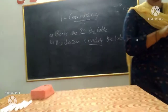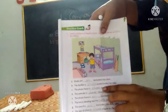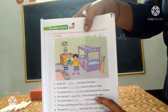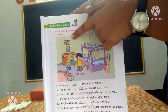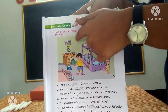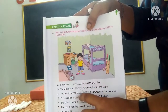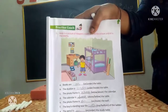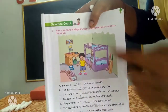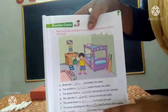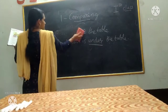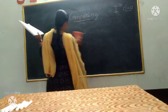Next (C): photo frame is — dash — the calendar. Where is the photo frame? Up and above the calendar. Photo frame is above the calendar.